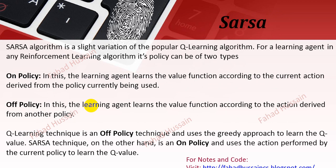The SARSA algorithm is a slight variation of the popular Q-learning algorithm for a learning agent in reinforcement learning. Its policy can be of two types: on-policy or off-policy. When we saw Q-learning in theory and practice, we found that Q-learning is a greedy approach because it is off-policy.